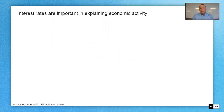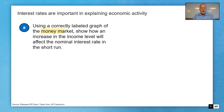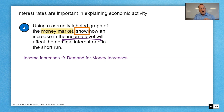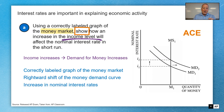On to FRQ number three. Interest rates are important in explaining economic activity. Using a correctly labeled graph of the money market, show how an increase in income level will affect the nominal interest rate in the short run. As income increases, the demand for money increases — we have more money, we're going to spend more money. So demand for money increases. We want to show that on our money market graph with a rightward shift of the money demand curve, resulting in an increase in interest rates. Always ACE your graphs.